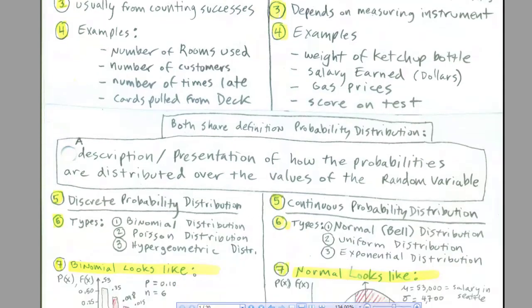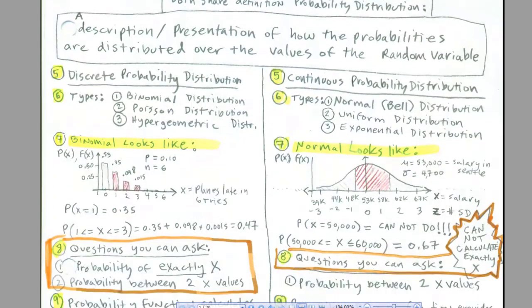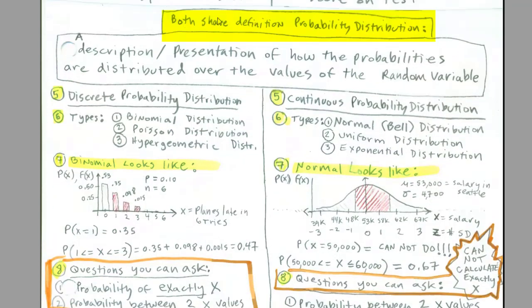Now each one of the discrete and continuous random variables share the definition of a probability distribution. That's a description or presentation of how the probabilities are distributed across the values of the random variable. Last chapter, it was discrete random variable. This chapter, it's continuous.